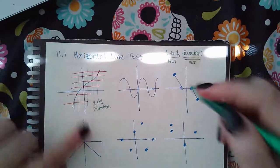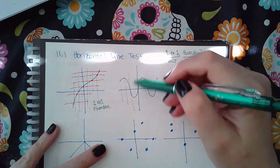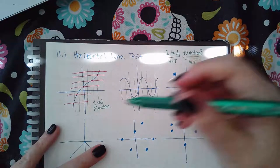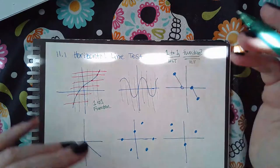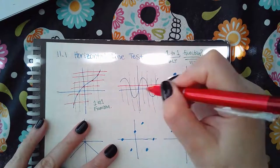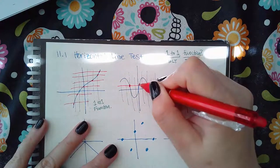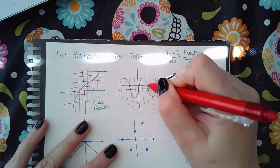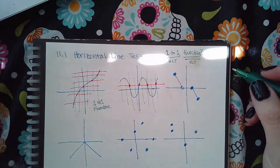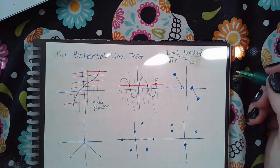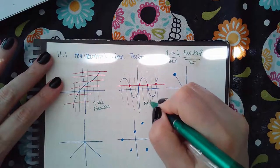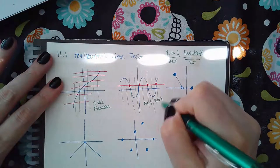Now this graph — it passes the vertical line test; no matter how many vertical lines I draw, they all only touch that curve one time. But when you do the horizontal line test, notice that the horizontal line touches the graph four times. It only has to touch it two times or more and it's bad. So this is not a one-to-one function.